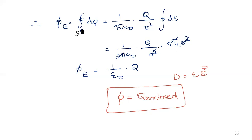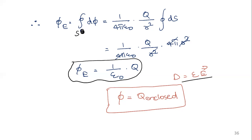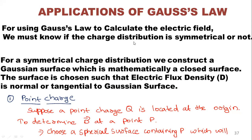The four pi terms cancel and r squared cancels, giving flux equal to one over epsilon zero times the total charge. Using the relation D = epsilon·E, the epsilon terms cancel, and the total flux equals Q enclosed — the total charge enclosed. This is the proof of Gauss's law. It is simple, but you need to remember it to be able to reproduce it.